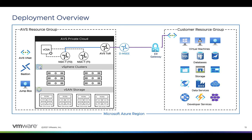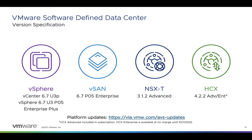There's a link in the video description to an AVS private cloud component inventory document that walks through the specific versions deployed today. Each private cloud includes clusters with a number of dedicated bare-metal server nodes provisioned with vSphere 6.7 Update 3, PATRO 5, Enterprise Plus, and that can be between 3 and 16 hosts per cluster.